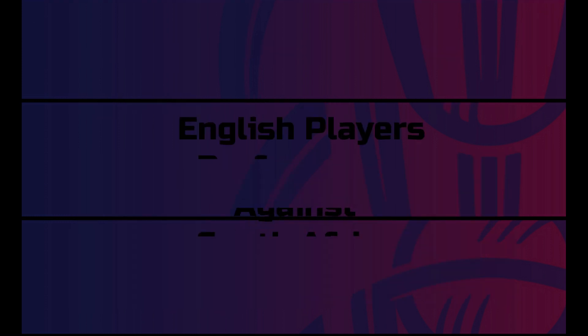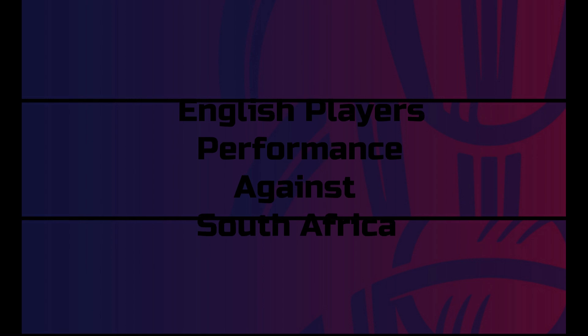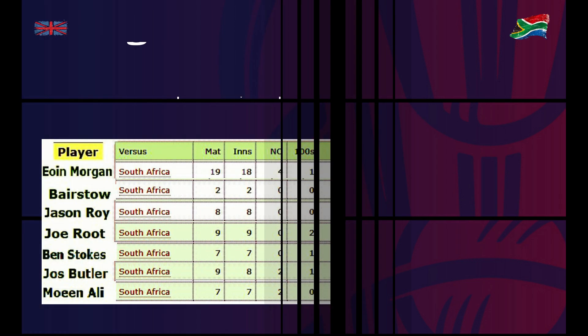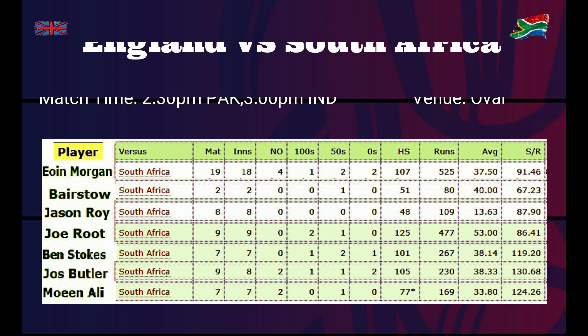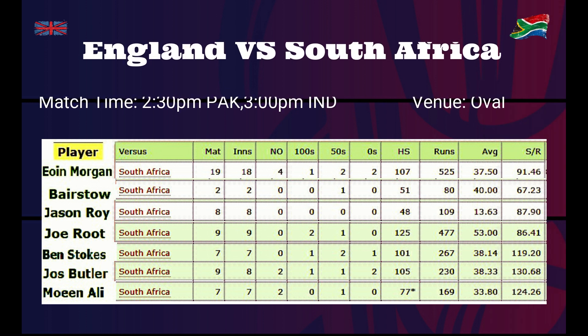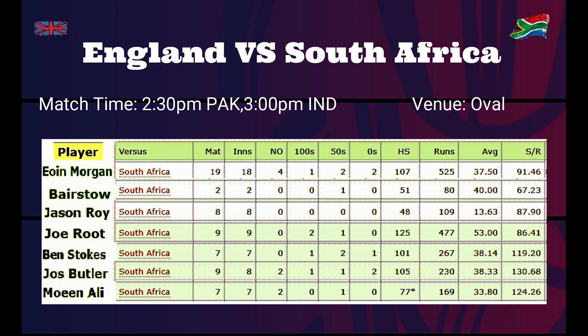Looking at English team players' performance against South Africa, among current English team players, Eoin Morgan played the maximum of 19 matches against South Africa and has an average of almost 38 runs.